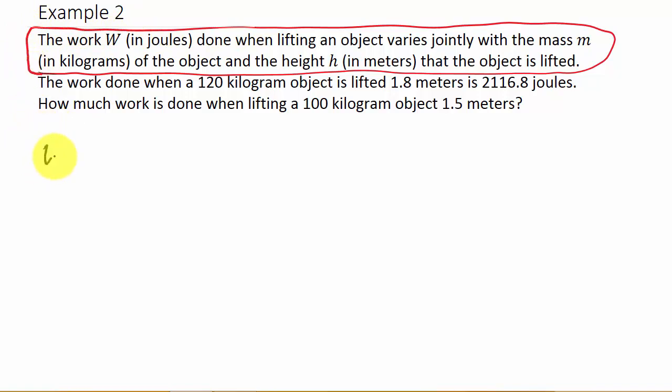For the next model, the work W in joules done when lifting an object varies jointly with the mass m in kilograms and the height h in meters that the object is lifted. So that's going to be our constant k times m times h.